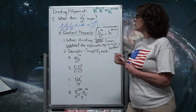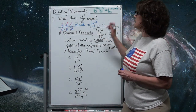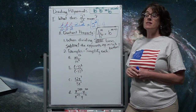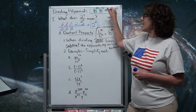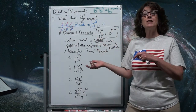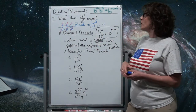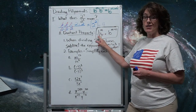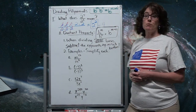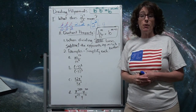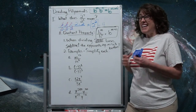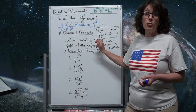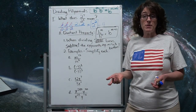A lot of people confuse the product property with the quotient property. The product property says when you multiply the bases, add the exponents. The quotient property is the reverse: division is the opposite of multiplication, so subtraction is the opposite of addition. If you know one, you essentially have the other memorized because they're opposites.